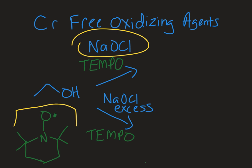With bleach and TEMPO there are two different sets of reaction conditions you can use so that you can have selectivity over the oxidation state of the product. If I just use bleach and control the molar amount along with TEMPO, I can stop at an aldehyde — I'd have a double bond to oxygen but the H would still remain on there.